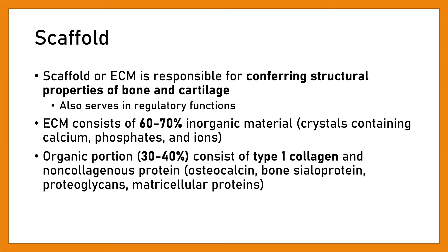The scaffold, or extracellular matrix (ECM), is responsible for conveying structural properties of bone and cartilage, and also serves regulatory functions. ECM consists of 60–70% inorganic material — crystals containing calcium, phosphates, and ions. The organic portion, accounting for 30–40%, consists of type 1 collagen and non-collagenous proteins such as osteocalcin, bone sialoprotein, and proteoglycans.